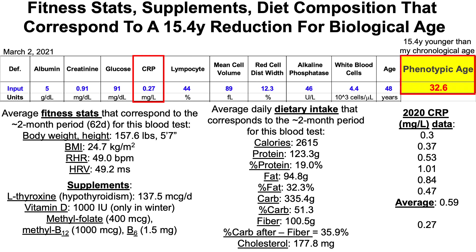Let's take a deeper look at my CRP values, since that's one of the greatest changes I've been able to make over the past few blood tests. In 2020, my six measurements for C-reactive protein ranged from a relatively lower 0.3 to as high as 1.01. Over the past three blood tests, I've been able to reduce that down to 0.27 on this blood test, which is about half of my average 2020 value. CRP increases during aging and higher levels are associated with an increased all-cause mortality risk, so it's important to keep it low over the decades to come.